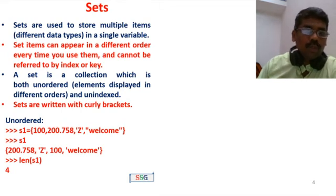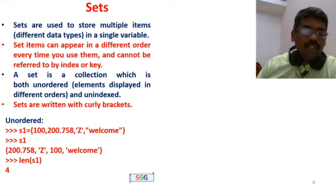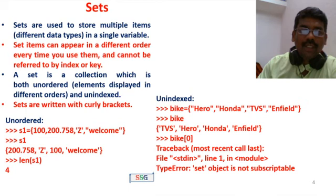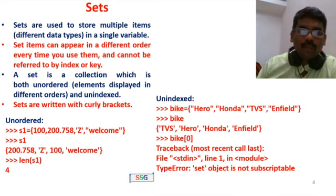For example, S1 contains: 1, 2, 4, 4, 4, 4. Since sets are unindexed and do not allow duplicates, the output will show only: 1, 2, 4.